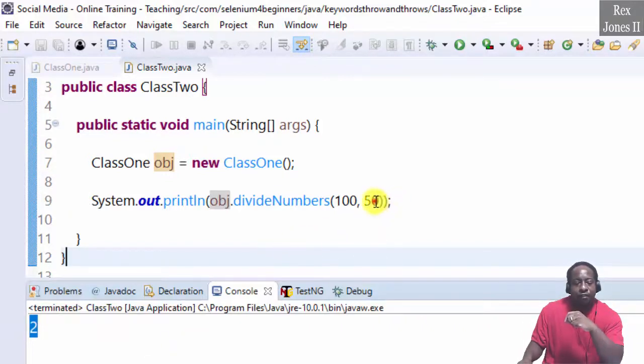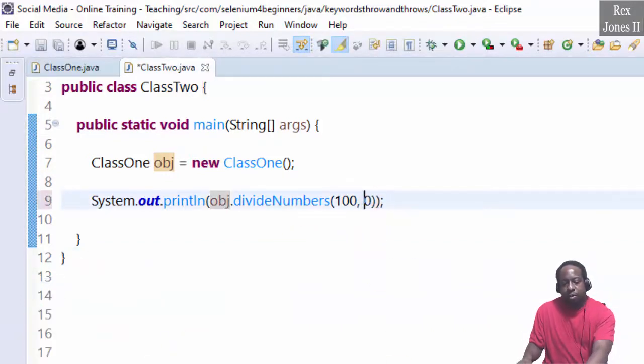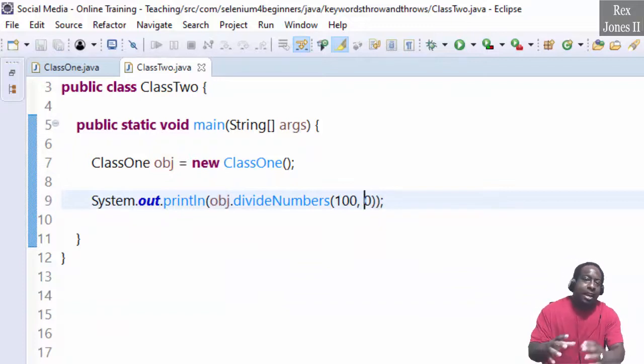Suppose I change 50 to zero. In the previous video, we saw an exception will show up because a number cannot be divided by zero. Let's run again.